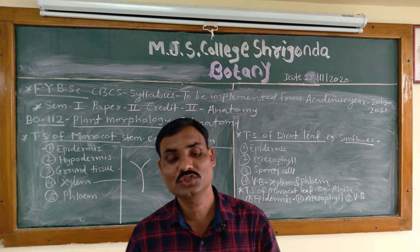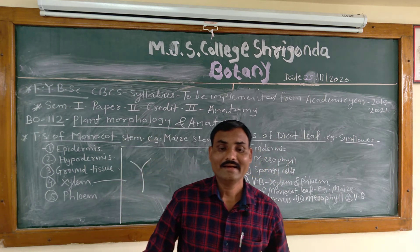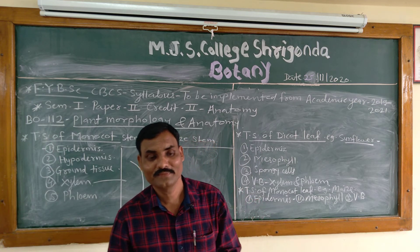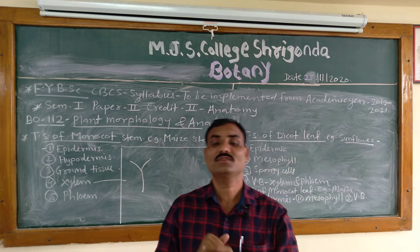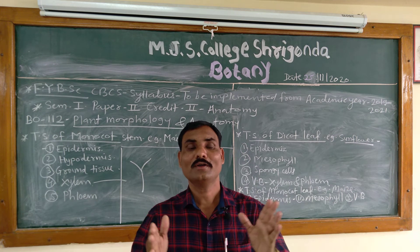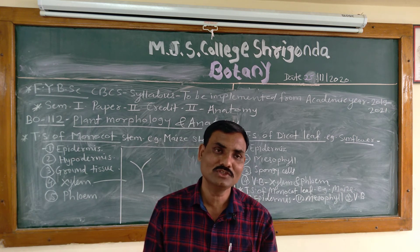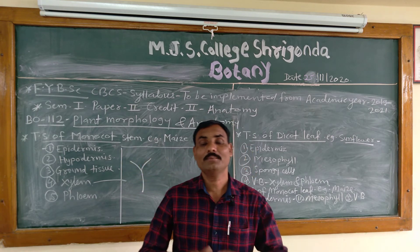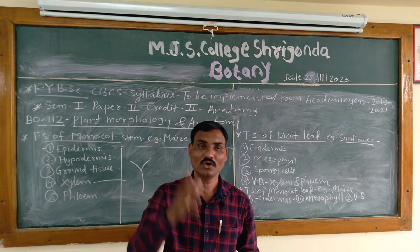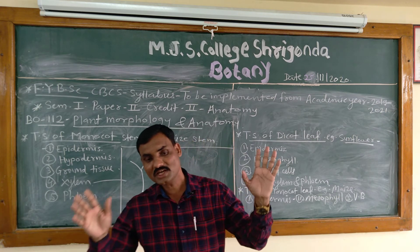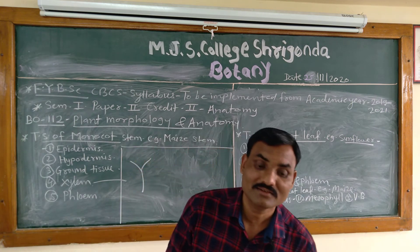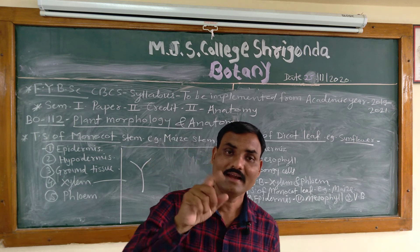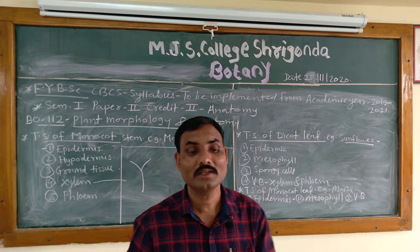Helianthus leaves show dorsiventral or bifacial type of leaf. The leaves of dicotyledonous plants are dorsiventral or bifacial — we can identify which is the upper side and which is the lower side. The typical dicot leaf, such as sunflower or mango, in transverse section shows different anatomical details.